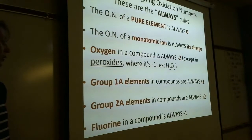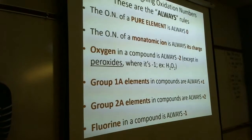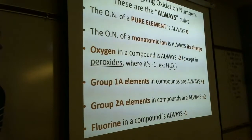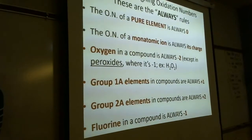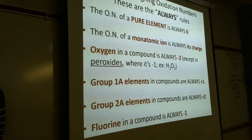The last always rule: fluorine in a compound is always -1. Those are your always rules — rules you can depend on 100% of the time. The only exception is oxygen in a peroxide. In intro chem, those are the only exceptions you're responsible for.